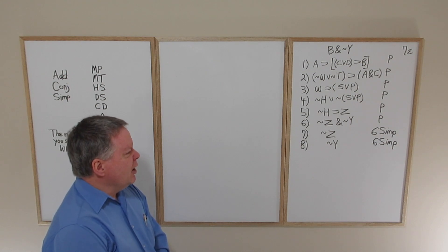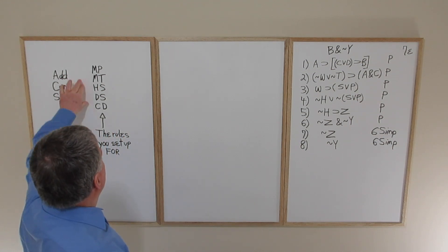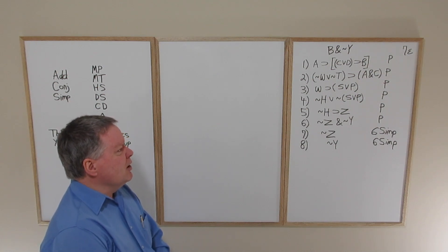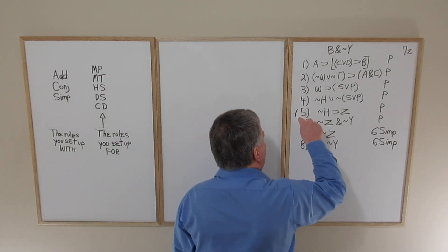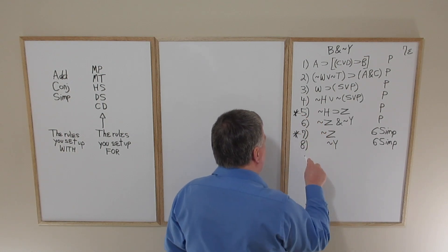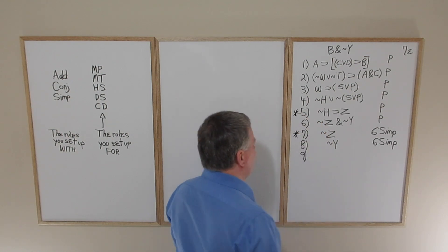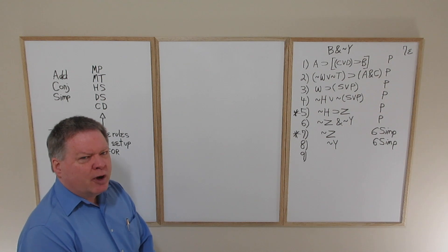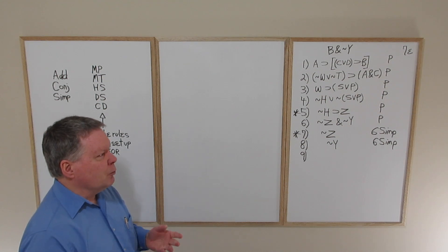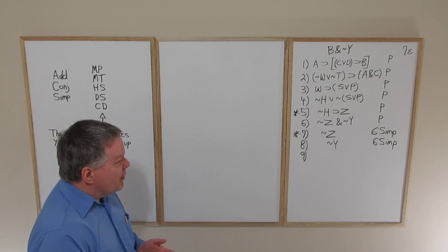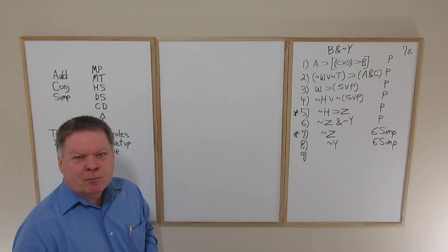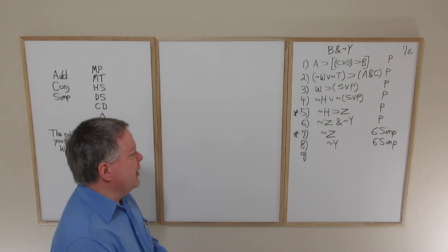Snapping tilde Z off line six opens up a rule employment opportunity — namely modus tollens. Hopefully by this point you're finding it intuitive, not having to mechanically look at the rules to spot what's required, but becoming familiar enough with these patterns that they begin to just pop out at you.